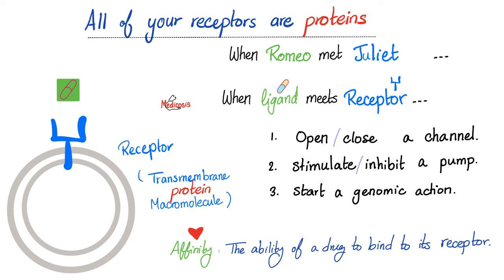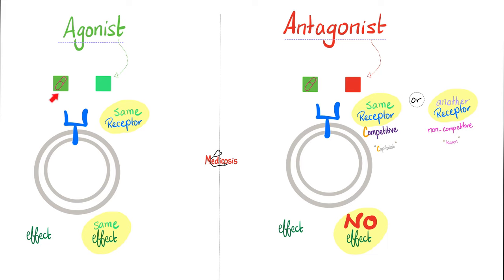When the drug meets the receptor — just like when Romeo met Juliet — you can open or close a channel, stimulate or inhibit a pump, or start a genomic action. Genomic means related to DNA: if the drug is lipid soluble, its receptor is on the inside near the nucleus, and the nucleus has genes. How much does the drug and the receptor love one another? It's called affinity. An agonist means 'just like you' — if you increase the heart rate, I will increase the heart rate as well. We share the same receptor and produce the same effect.